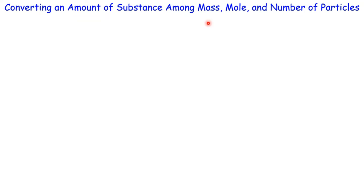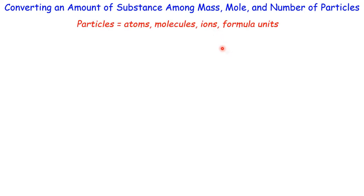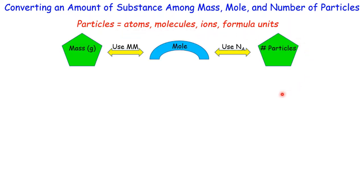Now let's talk about conversions among these quantities. Particles can be atoms, molecules, ions, or formula units. Mole is the bridge — using the mole concept, we can convert from mass to particles or vice versa. There are typically six types of calculations.